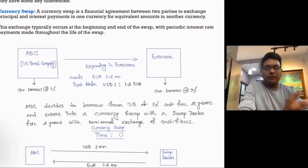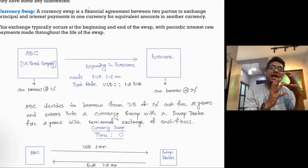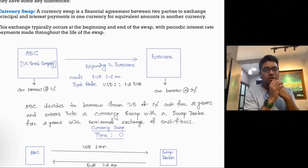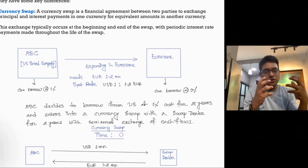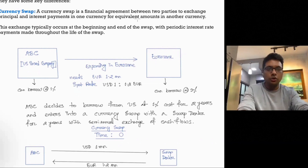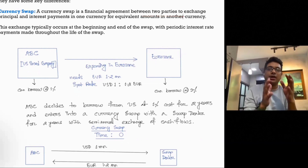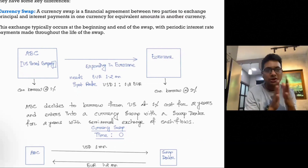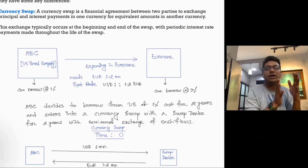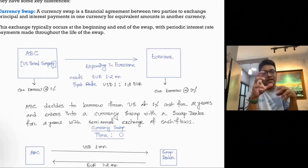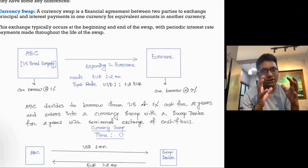Currency swap and FX swap are two financial contracts used in international markets to hedge against currency risk. Let's take an example of a currency swap. A currency swap is a financial agreement between two parties where the agreement defines the exchange of principal and interest payments in one currency for equivalent amounts in another currency.